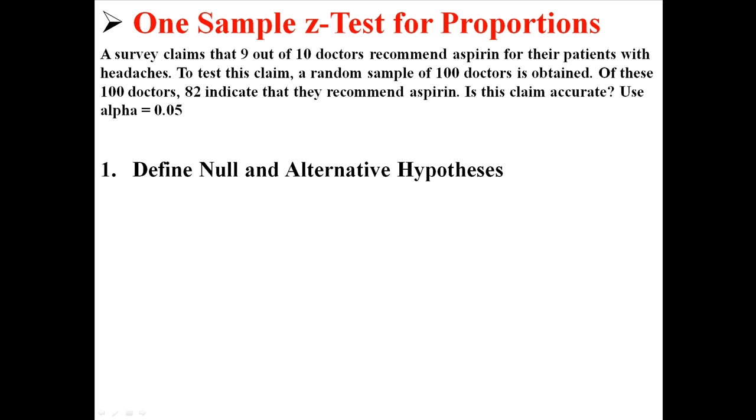Step one is to define the null and the alternative hypotheses, which is pretty easy. Our null hypothesis is that the population proportion is equal to 0.90. That's 9 out of 10. We're starting off with the assumption that 9 out of 10 doctors recommend aspirin. H1, the alternative hypothesis, is that p is not equal to 0.90. We're testing to see if that 9 out of 10 doctors claim is not true.